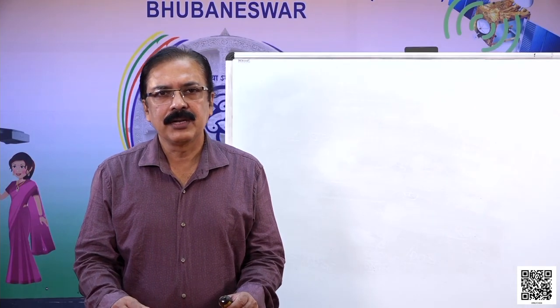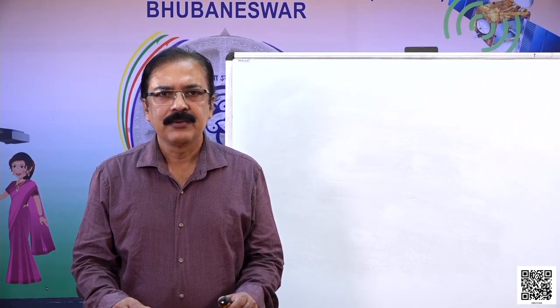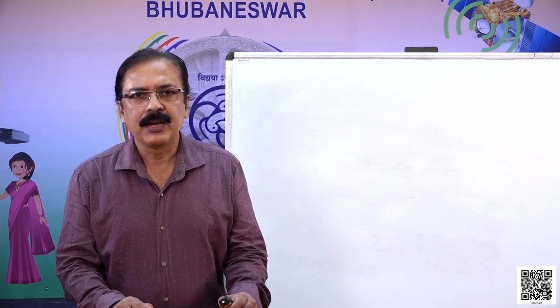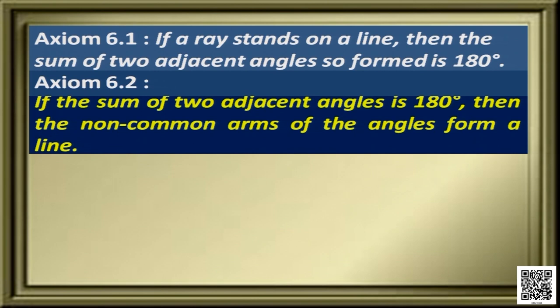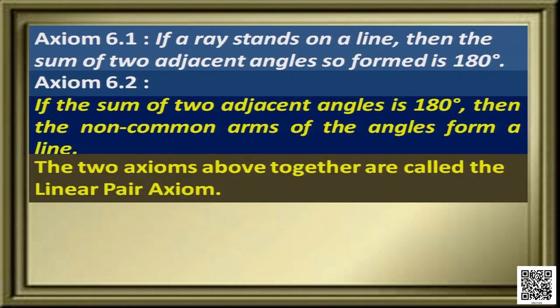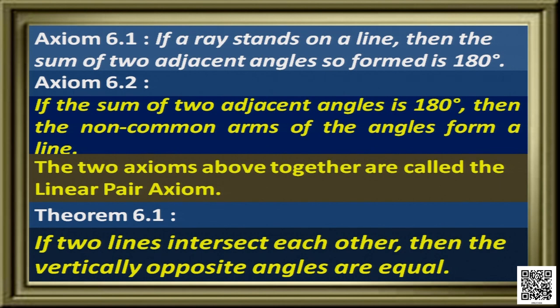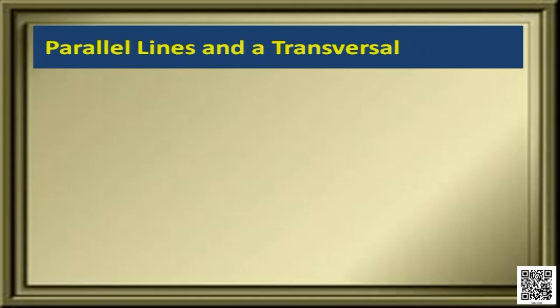Before going to discuss the lessons to be taught today, let's recapitulate what we have learnt in the last session. We learnt about some axioms. If a ray stands on a line, then the sum of two adjacent angles is 180 degrees. The second axiom says if the sum of two adjacent angles is 180 degrees, then the non-common arms of the angle form a line. The two axioms above together are called the linear pair axiom. We also discussed Theorem 6.1, which states that if two lines intersect each other, then the vertically opposite angles are equal.